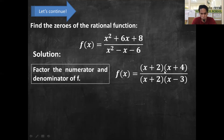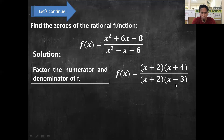So why x + 2 and x + 4? The factor of x² is x and x. The factor of 8 with respect to the middle term which is 6 is 2 and 4, because 4 times 2 is 8 and 4 plus 2 is 6. For the denominator, the factor of x² is x and x, and the factor of negative 6 with respect to negative 1 is 2 and negative 3, because negative 3 times 2 is negative 6 and negative 3 plus 2 is negative 1. That's why those are our factors.